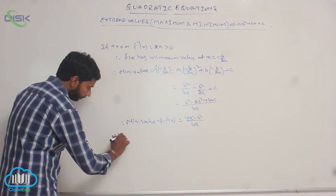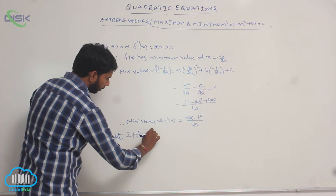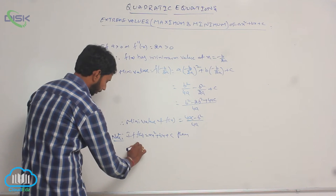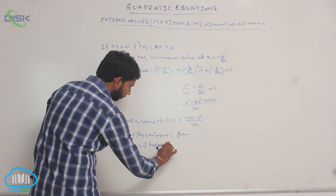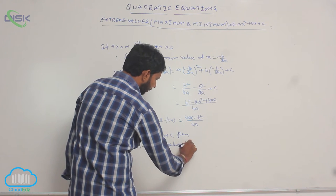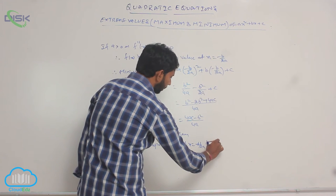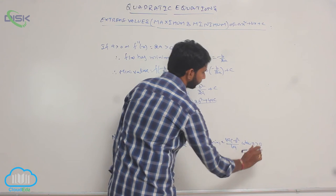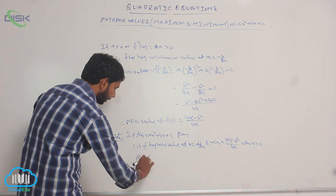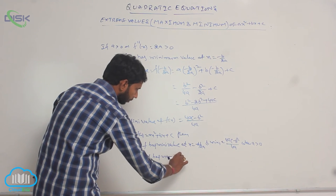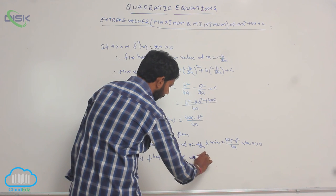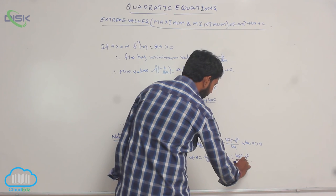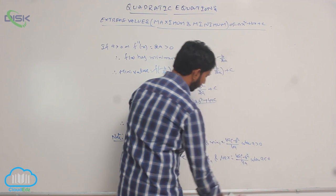Note: if f of x equals ax square plus bx plus c, then f has a minimum value at x equal to minus b by 2a, and the minimum value is 4ac minus b square by 4a, when a is greater than 0. If a is less than 0, then f has a maximum value at x equal to minus b by 2a, and the maximum value is equal to 4ac minus b square by 4a.